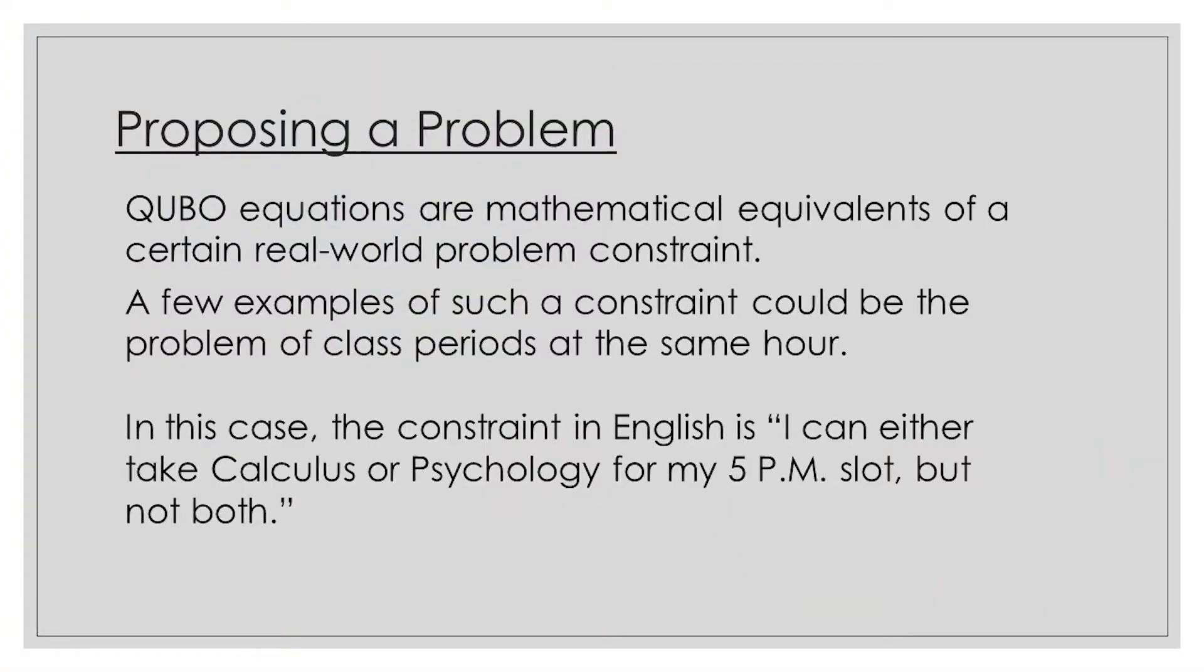Preparing a problem for annealer solving starts with writing a QUBO equation. QUBO equations are mathematical equivalents of certain real-world problem constraints. A few examples of such constraints could be the problem of class periods at the same hour. In this case, the constraint in English is I can take either calculus or psychology for my 5 PM slot, but not both. There's a whole lot of real-world example constraints that you can use for these problems on annealers, and they all start with writing a QUBO equation that defines them mathematically.